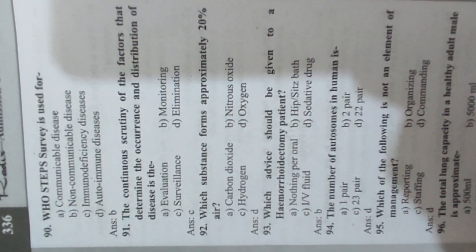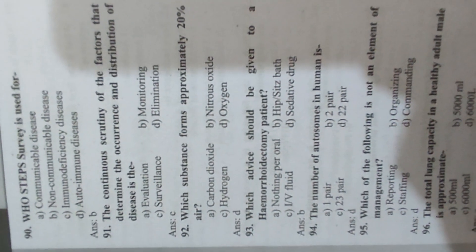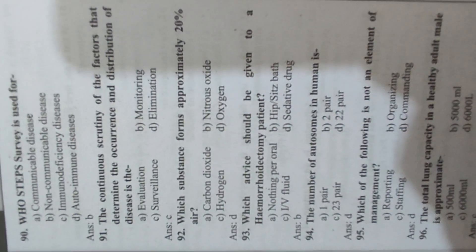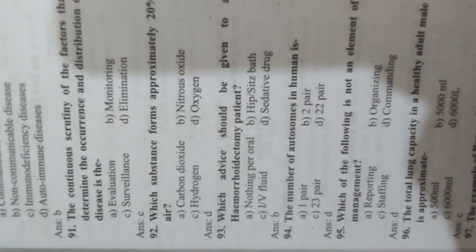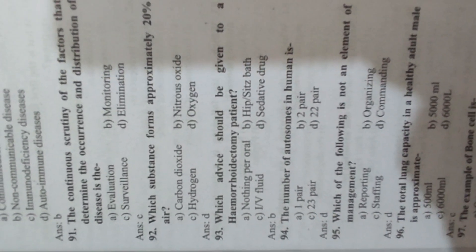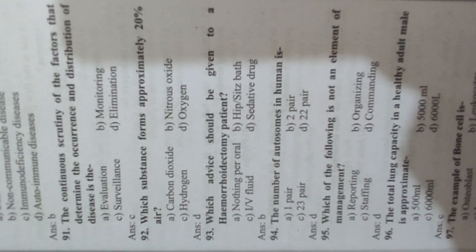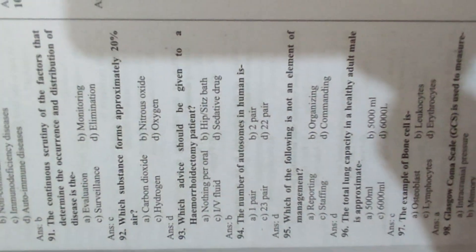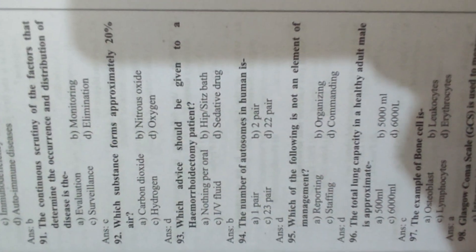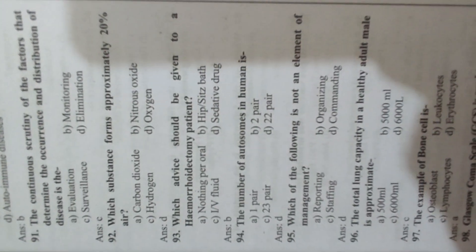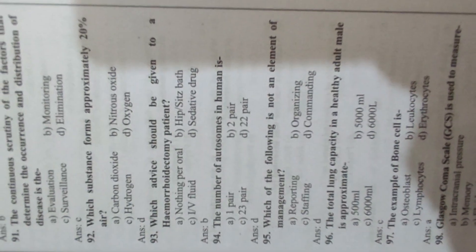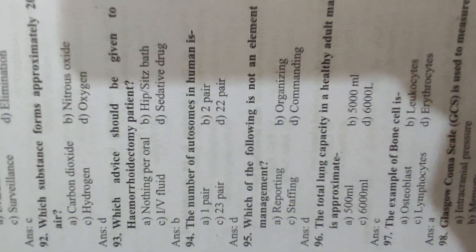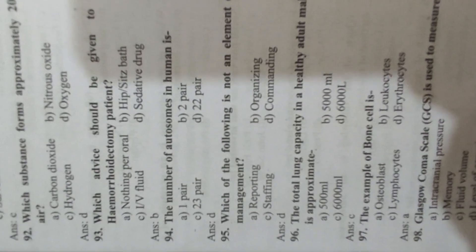Question 91: The continuous scrutiny of the factors that determine the occurrence and distribution of disease is called surveillance. Question 92: Which substance forms approximately 20% of air? Answer D, oxygen. Question 93: Which advice should be given to a hemorrhoidectomy patient? Answer B, sitz bath. Question 94: The number of autosomes in humans is 22 pairs.